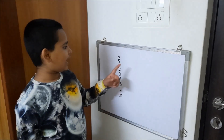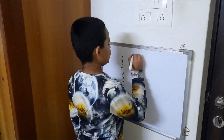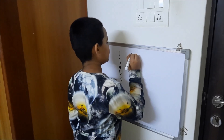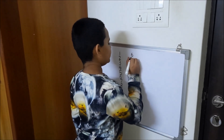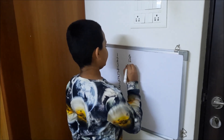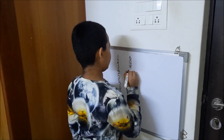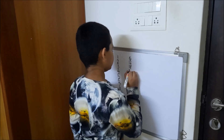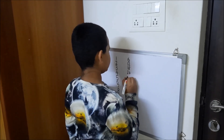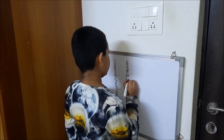Now we have to write the 6 times table in the right side: 6×1 is 6, 6×2 is 12, 6×3 is 18, 6×4 is 24, 6×5 is 30.